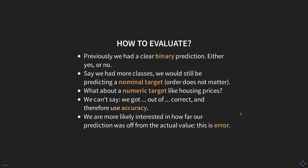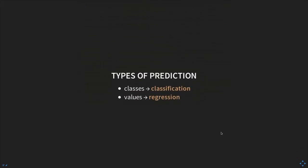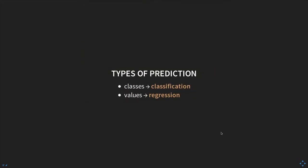How would we evaluate house price? Previously we had a binary prediction — yes or no, play or don't play. If we have more than two classes where order doesn't matter, like predicting outlook (cloudy, hot, mild), this is called a nominal target. A numeric target, where we predict a price range, is different. For a numeric target we can't use accuracy; instead we use error — how far off we were in terms of house prices. This brings us to the two types of prediction: classification (predicting classes, binary or more) and regression (predicting values).